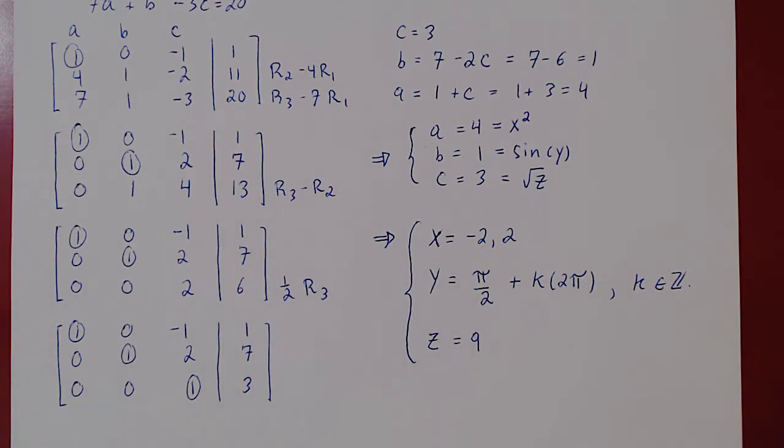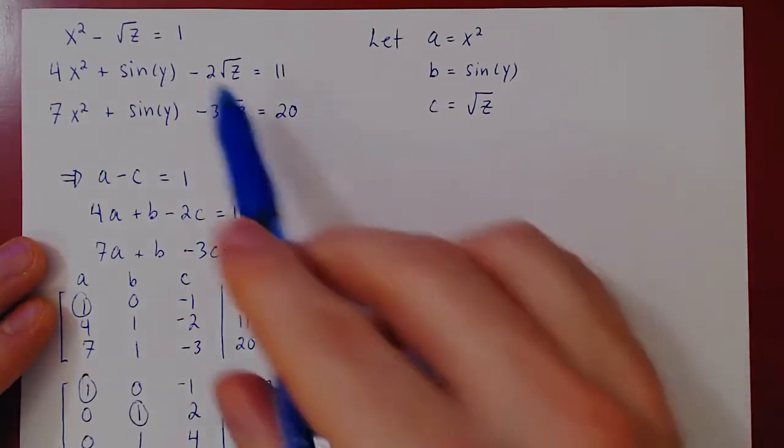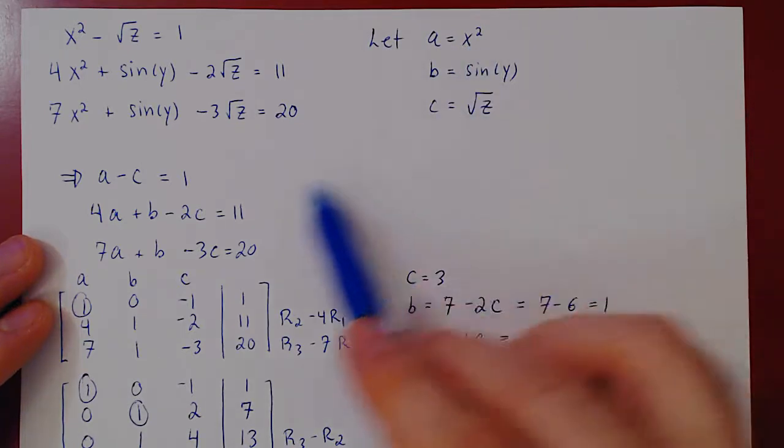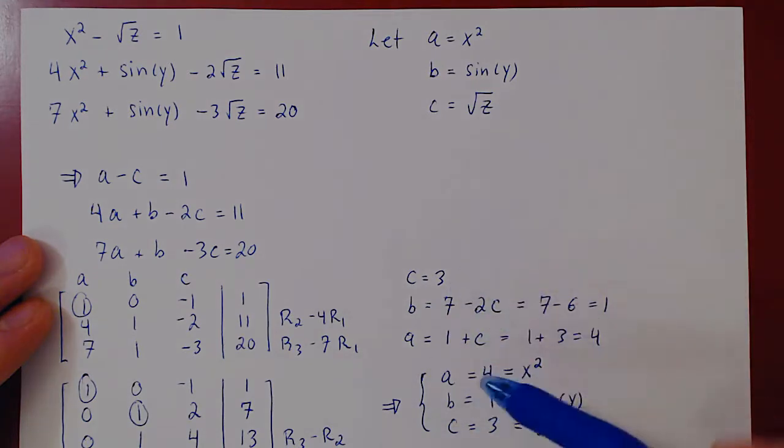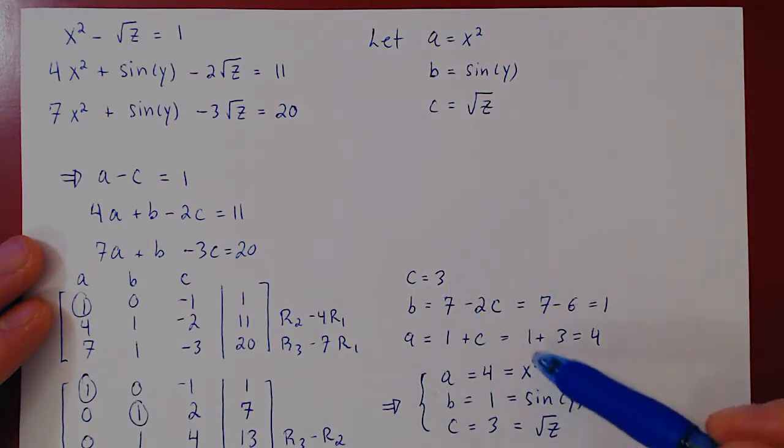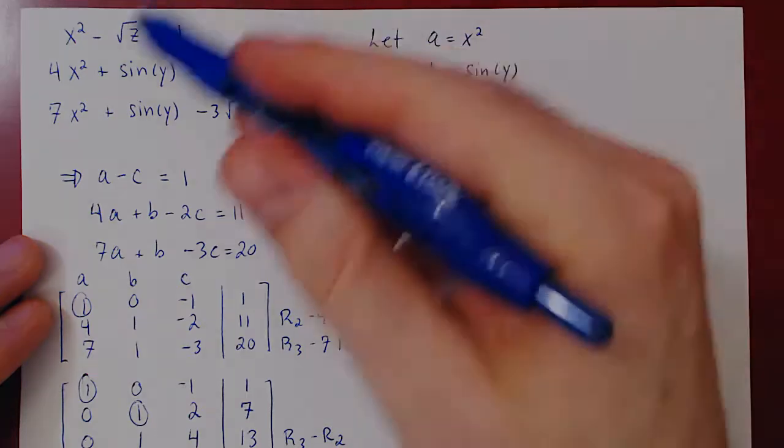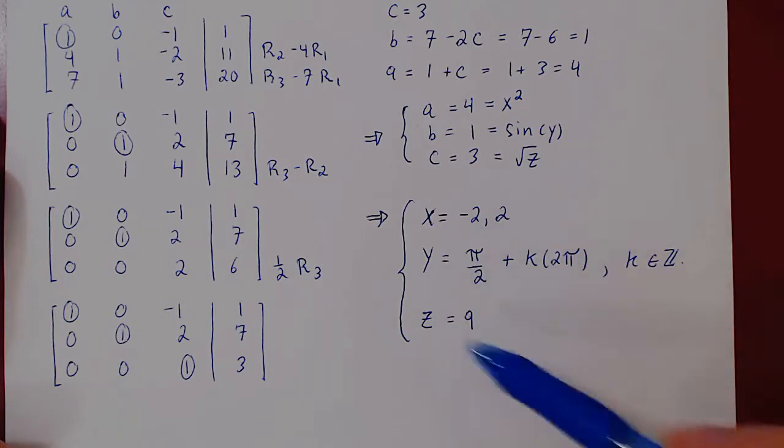And that's it. So keep in mind that even though sometimes the system may be non-linear, there may be a way to make a change of variables, so as to make it become a linear system. This you can solve using row reduction, and hopefully afterwards, you can solve for the original variables from the non-linear systems. And this was such an example.